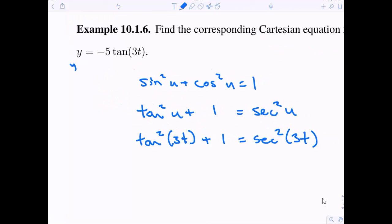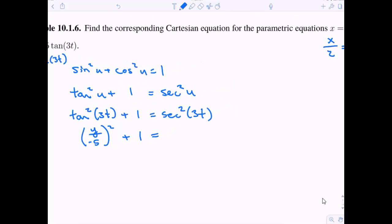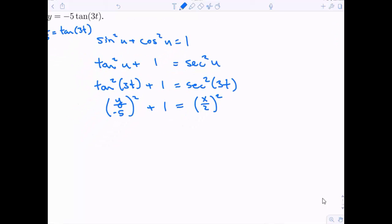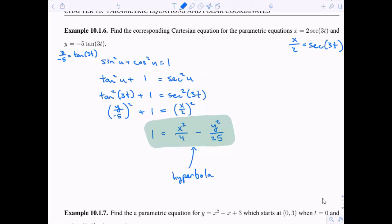Tangent squared of 3t plus 1 equals secant squared of 3t. We can make x over 2 the same thing as secant of 3t and y over negative 5 the same thing as tangent of 3t. So I plug these in. y over negative 5 squared plus 1 equals x over 2 quantity squared. Let's rearrange these things. I'm going to get 1 alone on this side and write x squared over 4 minus y squared over 25. For those of you who really loved algebra 2, you'll recognize this as a hyperbola. This is kind of friends with the ellipse and the circle.